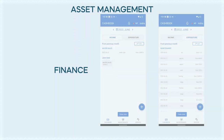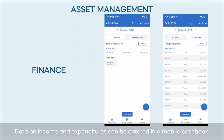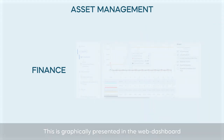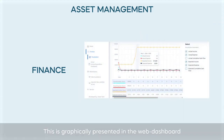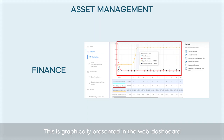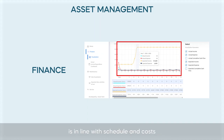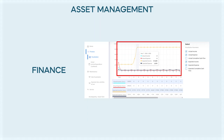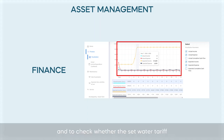Finance: data on income and expenditures can be entered in a mobile cashbook. This is graphically presented in the web dashboard and allows managers to judge whether maintenance is in line with schedule and costs, and to check whether the set water tariff and other sources of income are recovering costs.